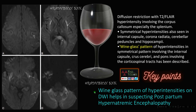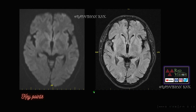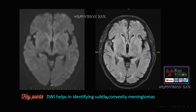Next case: here you can see there is restricted diffusion on DWI in the left frontal lobe convexity. On FLAIR images you can see there is an extra-axial lesion. Diffusion weighted imaging also helps in identifying subtle convexity meningiomas. Sometimes convexity meningiomas can be missed on routine sequences, but look for any restricted diffusion on DWI in the convexity which may help in identifying subtle convexity meningiomas.